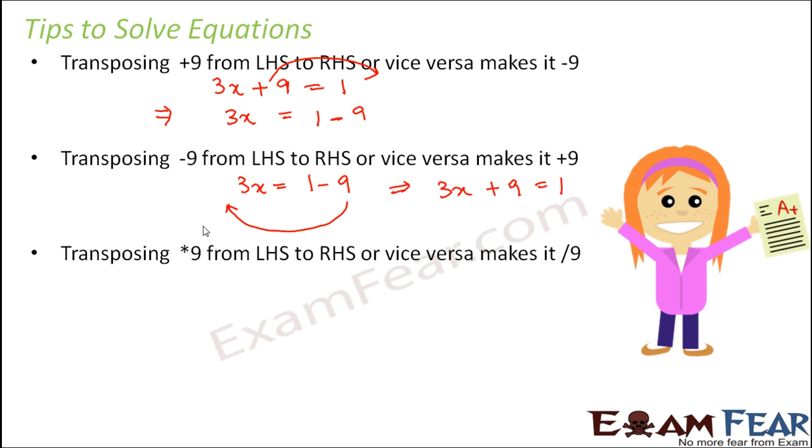Similarly, if you are transposing times 9 from one side to other, it becomes divided by 9. That means if you have 3x into 9 equals 1, and if you want to move this 9 to the right hand side, then it becomes 1 divided by 9. Earlier it was multiplied by 9, now it becomes divided by 9. So 3x equals 1 by 9.